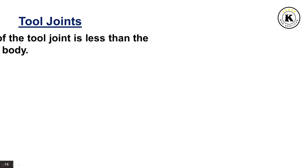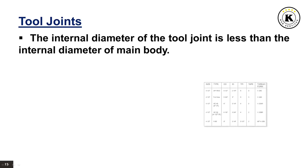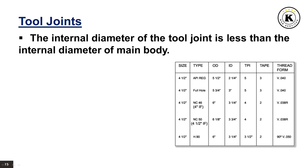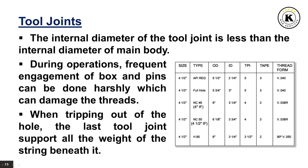The internal diameter of the tool joint is less than the internal diameter of the main body. The same stresses applied on the drill pipe during drilling operations are also subjected on the tool joint, along with additional issues. During operations, frequent engagement of box and pins can be done harshly, which can damage the threads. When tripping out of the hole, the last tool joints support all the weight of the string beneath them.